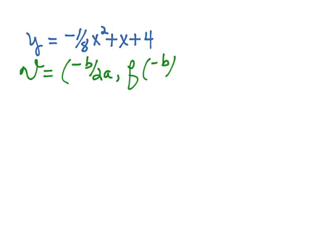So in this particular equation, a is negative one-eighth and b is equal to 1.